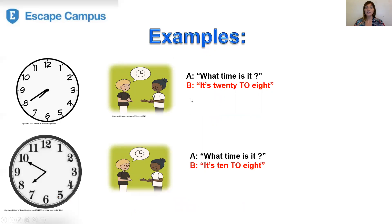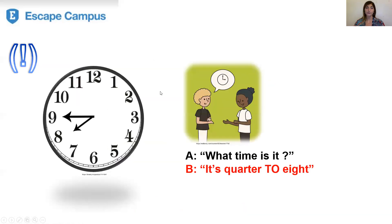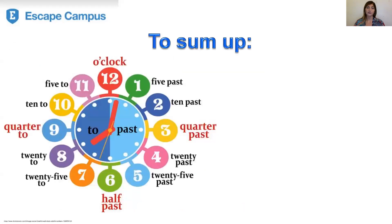'What time is it?' 'It's 20 to eight.' 'What time is it?' 'It's 10 to eight.' There are 20 minutes to eight, and here there are 10 minutes to eight. Be careful: 'What time is it?' 'It's quarter to eight.' We say quarter — it's quarter to eight.